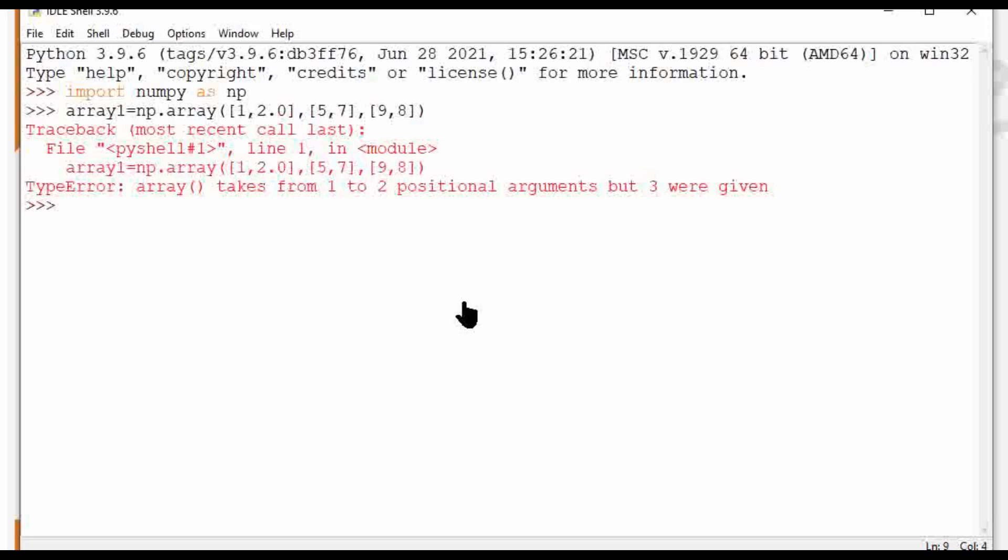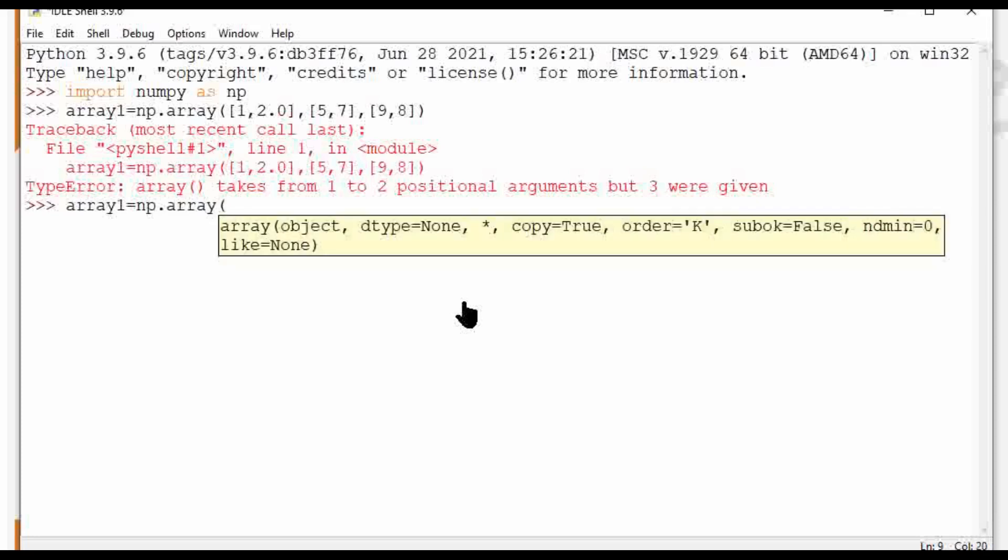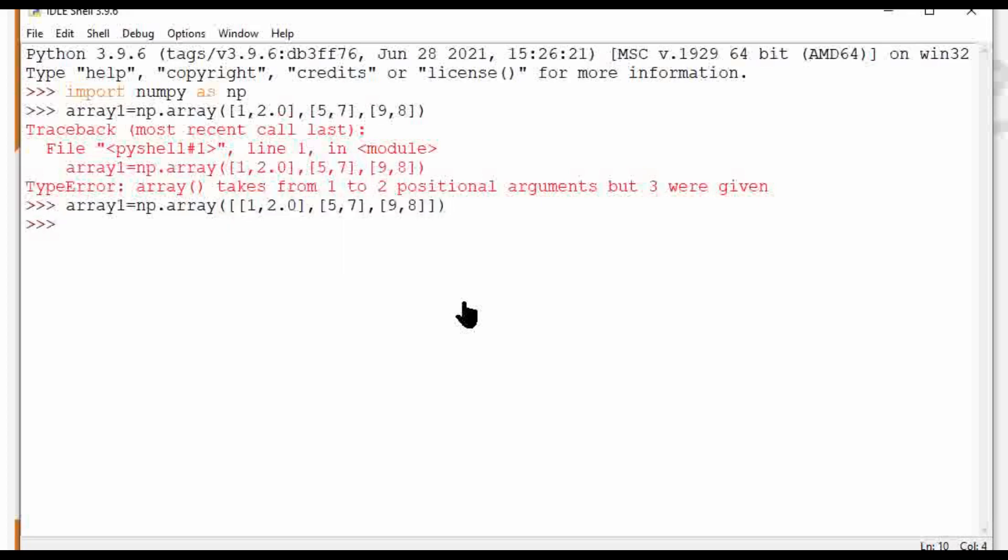Let's create once again. Array1 equals np.array, and this is a list. This is the first item of the list: 1, 2.0, then 5, 7, then 9, 8. Press enter key. See, the array is now created. It is a two-dimensional array. Then you need to print array1.